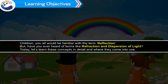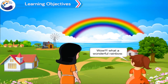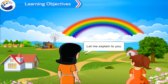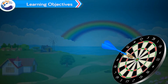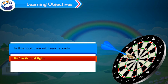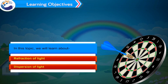Children, you would all be familiar with the term reflection, but have you ever heard of terms like refraction and dispersion of light? Today let's learn these concepts in detail and where they come into use. What a wonderful rainbow — but why do rainbows come only when it rains and how are they formed? In this topic we will learn about refraction of light and dispersion of light.